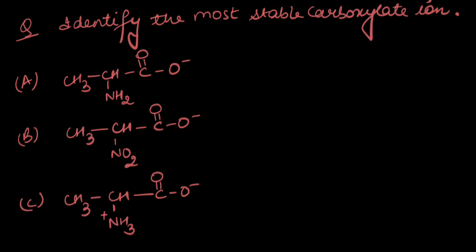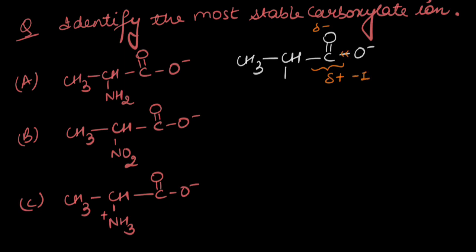Now, identify the most stable carboxylate ion — it's an anion. What's common in each case is the carboxylate part. The carbonyl group directly attached to the negatively charged oxygen atom is an electron withdrawing group: the carbon attached to a more electronegative oxygen atom has a partial positive charge, is electron deficient, and pulls electron density through sigma bonds — showing a −I effect. This happens in all three cases.